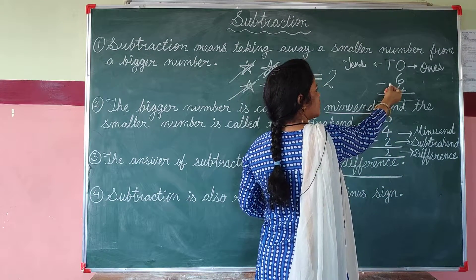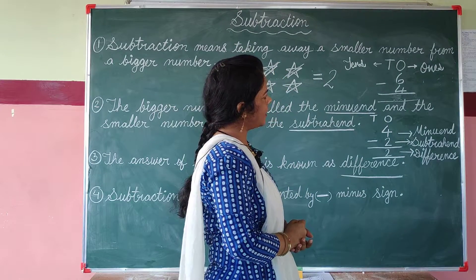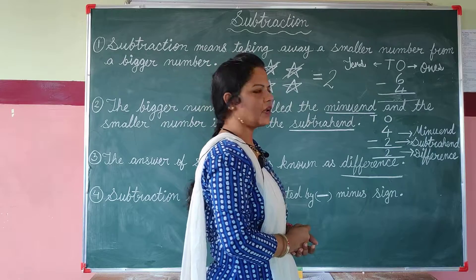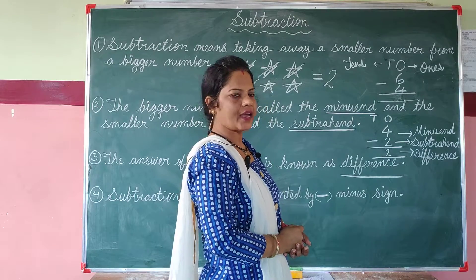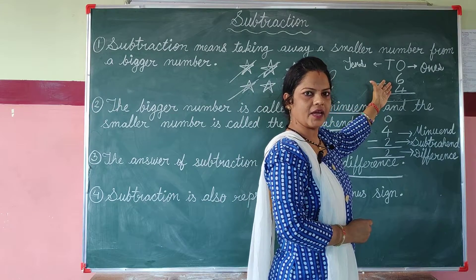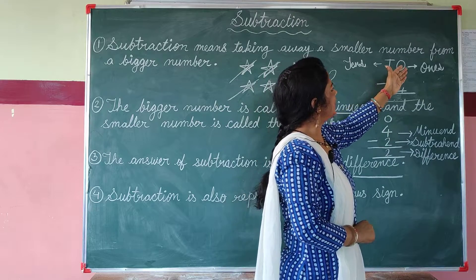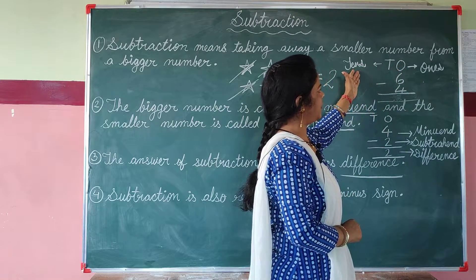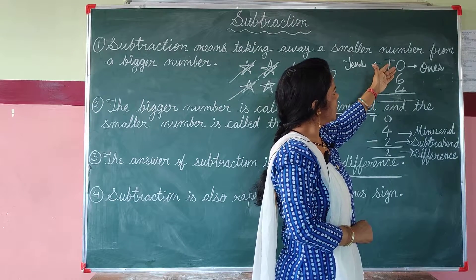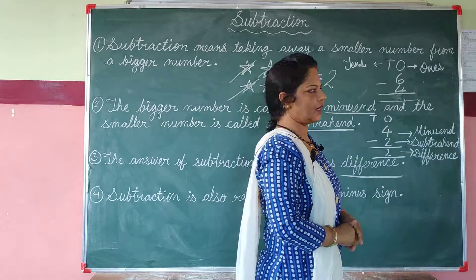We write 6 at the 1's place. Children, as you know, numbers from 1 to 9 come at the 1's place — we learned this in counting. Numbers from 1 to 9 are written at the 1's place, and numbers from 10 to 99 come at the 10's place. So this is the 1's place and this is the 10's place. Since we need to write the number 6, its place is the 1's place. After drawing 6 lines, we will minus 4 lines.